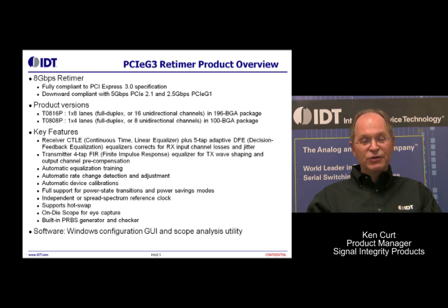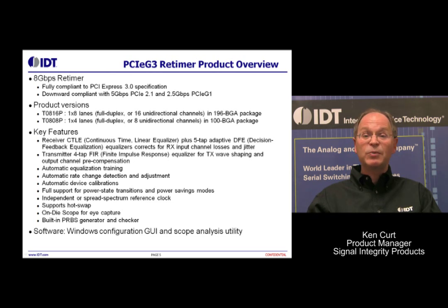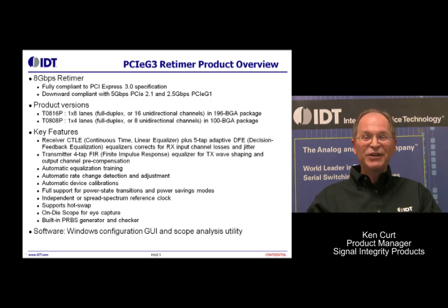On the receiver side, the device begins with a high sensitivity, high-speed analog CTLE equalizer stage — or continuous time linear equalizer — and that's followed by a decision feedback equalizer, a DFE, or digital equalizer stage. This exceeds PCI Express Gen3 specifications and provides compensation for channel loss, jitter, and ISI — inter-symbol interference — picked up from vias and other discontinuities, connectors, and things like that in the channel.